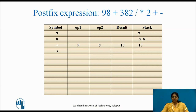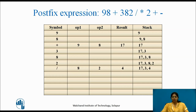Next symbol is 3 — an operand, push it on the stack (3 at top). Next symbol is 8 — push it on the stack. Next symbol is 2 — an operand, push it on the stack (stack: 17, 3, 8, 2 with 2 at top). Next symbol is the division operator — pop the top two elements 8 and 2, perform division, result is 4, push it on the stack (stack: 17, 3, 4 with 4 at top).